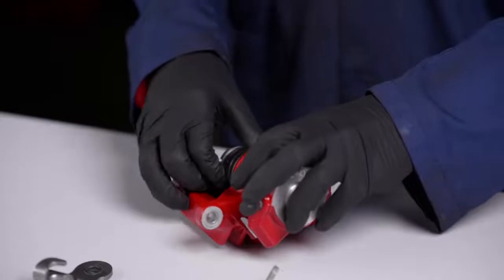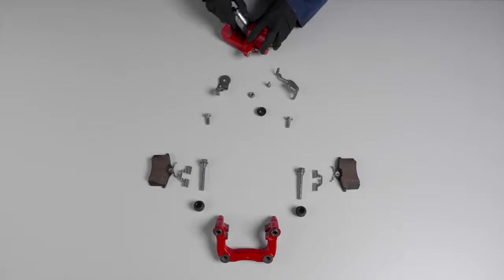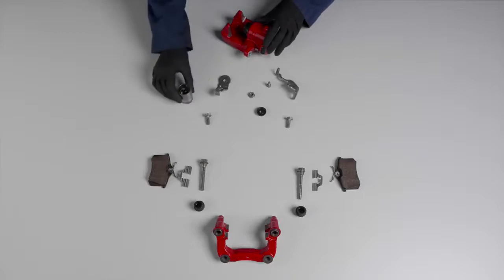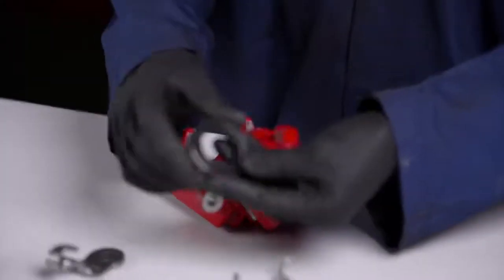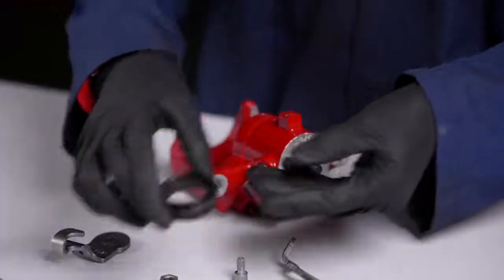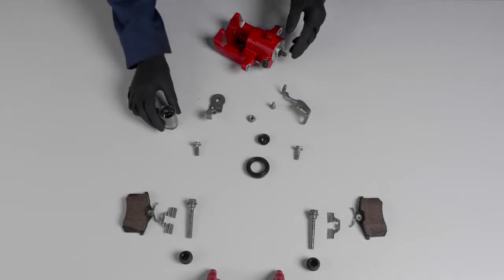In one hand, we have the piston. And in the other, we have the caliper boot, which function is the same as the guide pin boots. These boots can also have a metal insert or even a retaining ring.